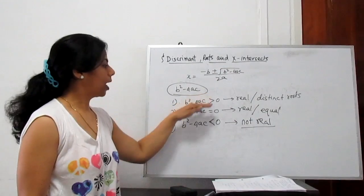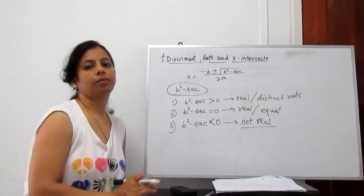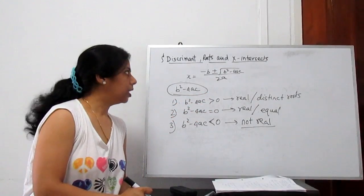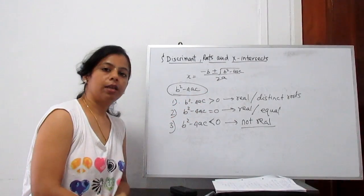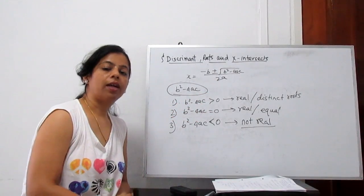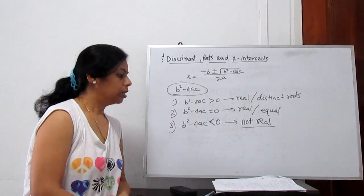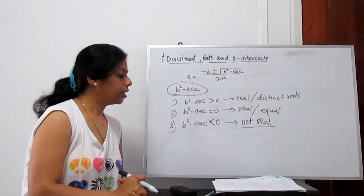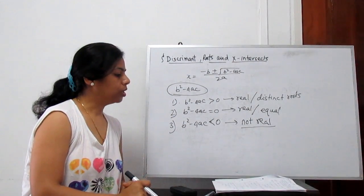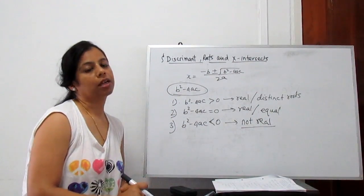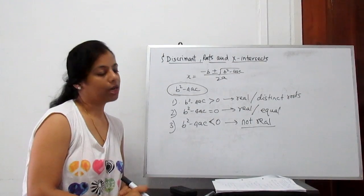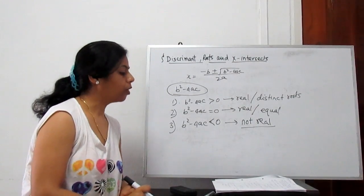We are here studying about real distinct roots and real equal roots. So there are three conditions. With this discriminant we can find the nature of the given equation and it allows you to determine the type of quadratic equation.